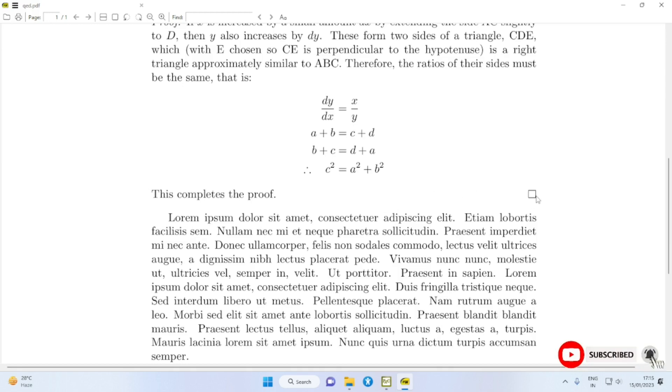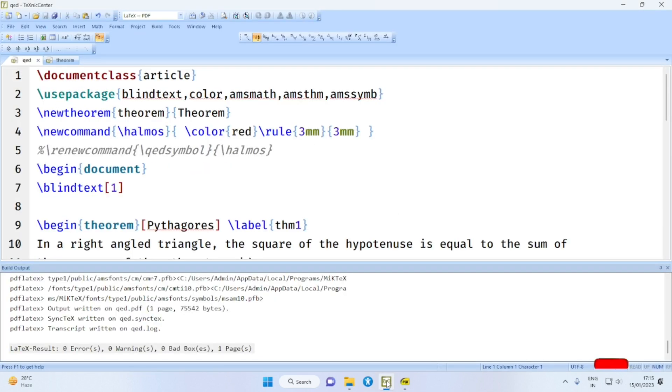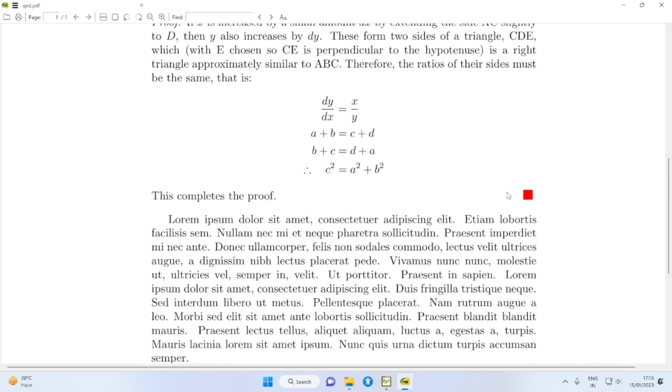Suppose you want to have a different symbol for this. You can define, let's say, newcommand halmas like this: color red and a square 3mm by 3mm. Then you can say renewcommand qedsymbol is halmas. Normally standard works do not use such color or different symbols. They use only the default empty square.